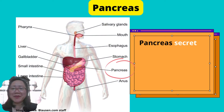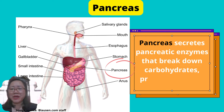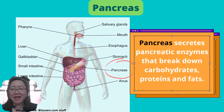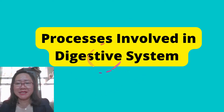Finally, we have the pancreas. The pancreas secretes pancreatic enzymes that break down carbohydrates, proteins, and fats. Let us now study the processes involved in the digestive system.